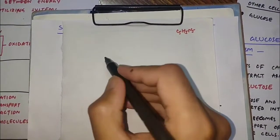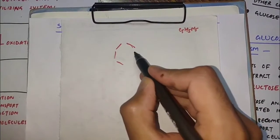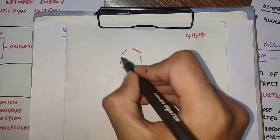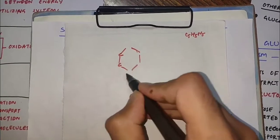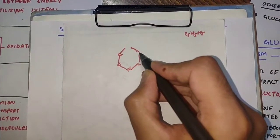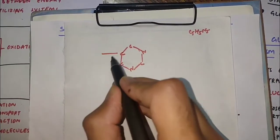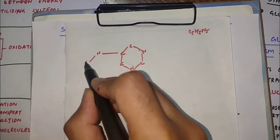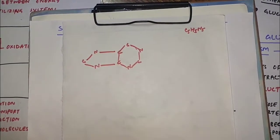To draw adenine — its formula is C5H5N5. First we draw a six-membered ring with alternating carbon and nitrogen: carbon, nitrogen, carbon, nitrogen, carbon. After the six-membered ring, we draw a five-membered ring: carbon, nitrogen, carbon, nitrogen, and carbon again. The six-membered ring and five-membered ring are now complete.